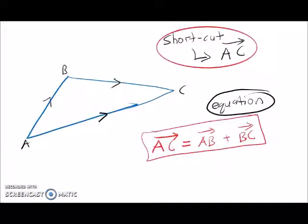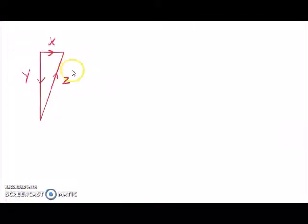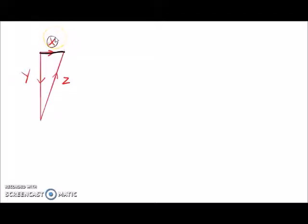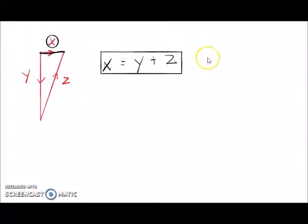Now let us look at the second triangle equation. The shortcut is X, so we can make X equals to Y plus Z. This is the equation for the second triangle.